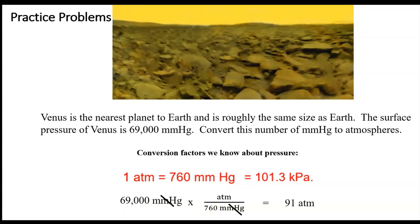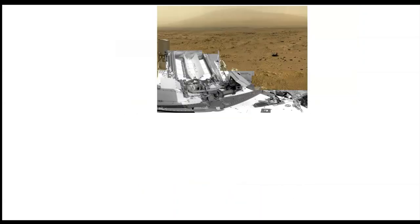We divide 69,000 by 760 and get 91 atmospheres. If this were on Earth, that would be a crazy answer — but on Venus, starting with 69,000 millimeters of mercury, 91 atmospheres is actually reasonable.